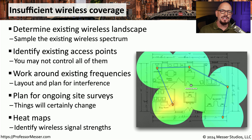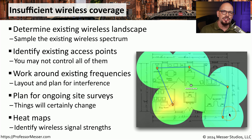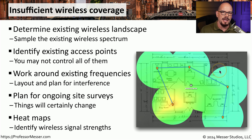One way to visually see how the wireless network is working is to create a heat map. You would walk around with your Wi-Fi analyzer, and it would examine how good the signal is at your particular location. The better the signal, the brighter the colors, and the worse the signal, the cooler the colors. This way you can immediately see where you may want to add or change the way your access points are distributed.